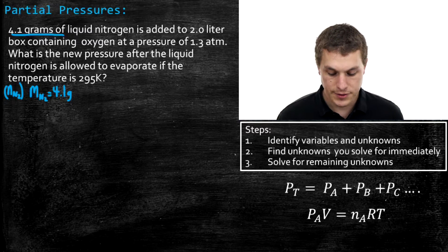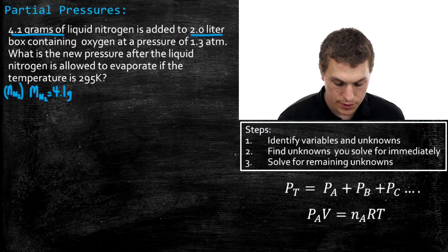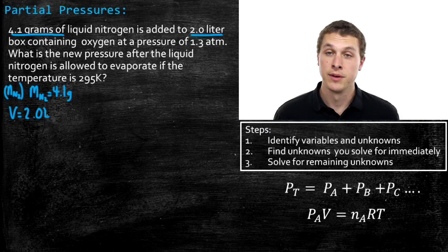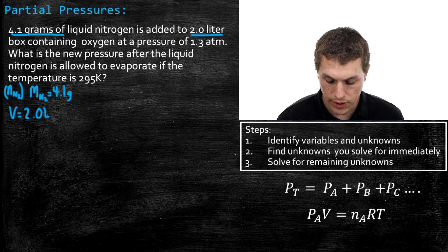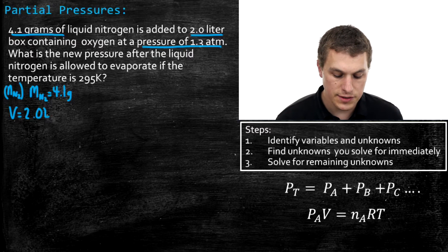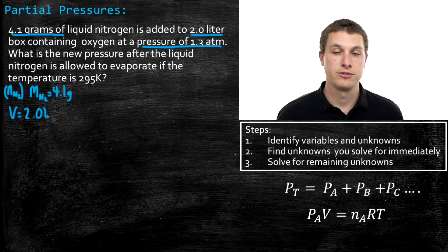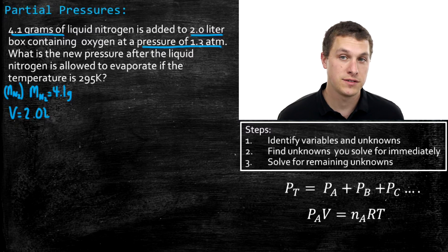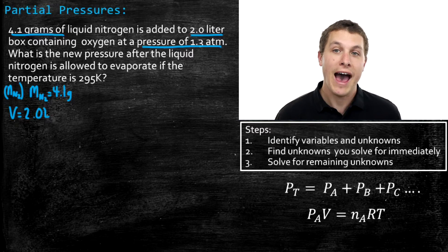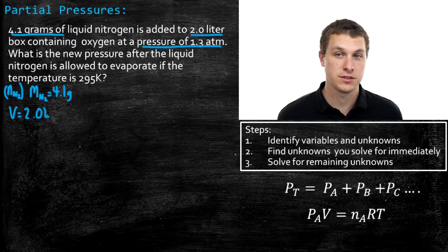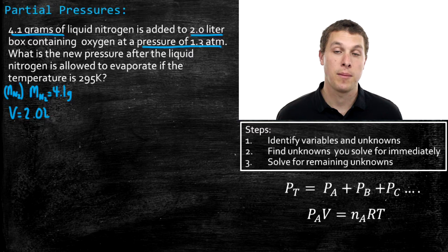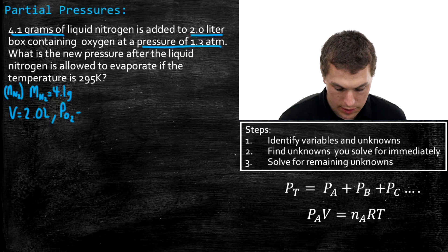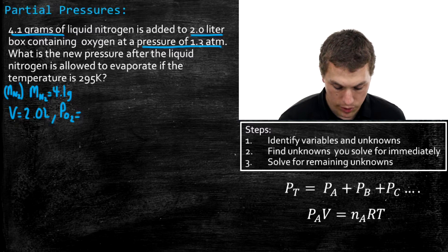Now, what other information are we given about this box? It tells us that the volume is 2 liters. So I'm going to write down that the volume is 2 liters. And it tells us that it contains oxygen and that this oxygen is at a pressure of 1.3 Atm. So what does that variable represent? This is a little tricky. But remember, before we add the nitrogen, there's 1.3 Atms of pressure from oxygen. After that nitrogen evaporates, the contribution from oxygen is not going to change. That's what partial pressure tells us. Just because we add other gases to it, the pressure from oxygen doesn't change. So that 1.3 Atm is actually telling us about the partial pressure of oxygen. So I'm going to write that down as pO2. And the partial pressure from oxygen is 1.3 Atms.